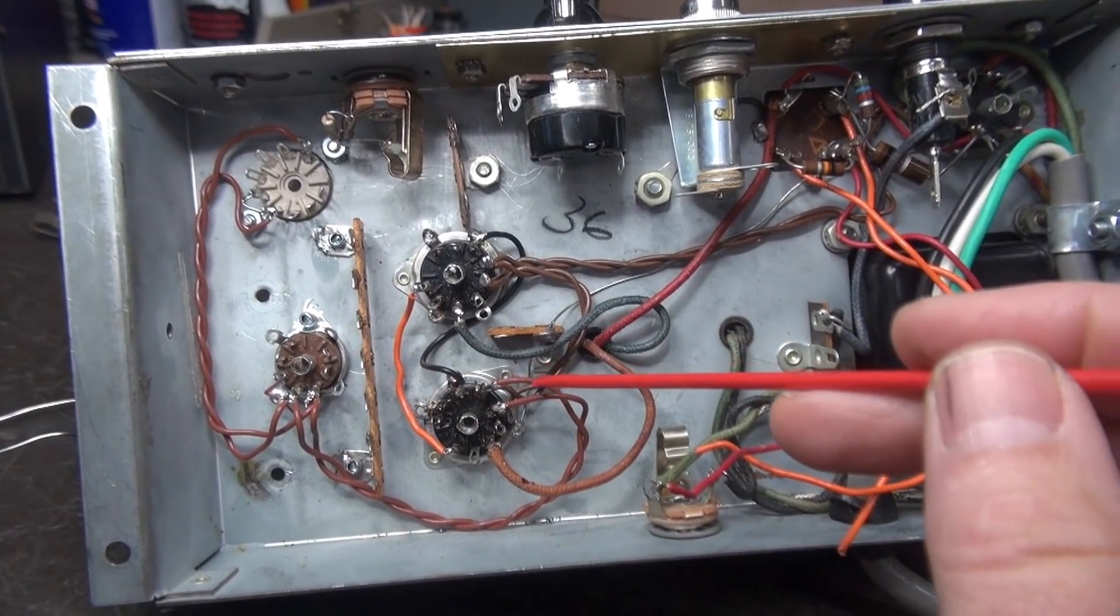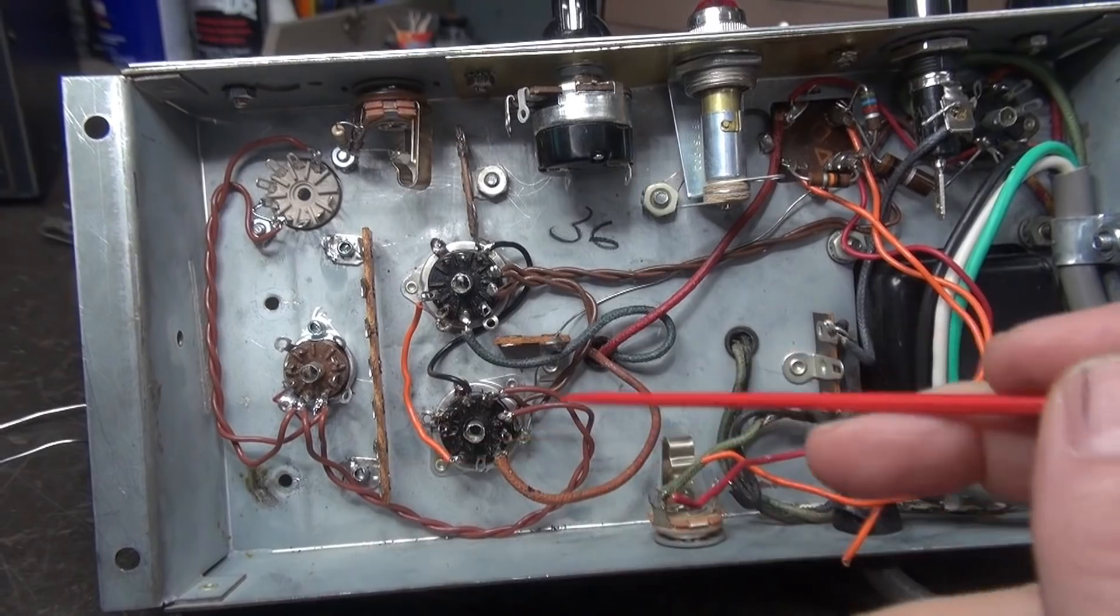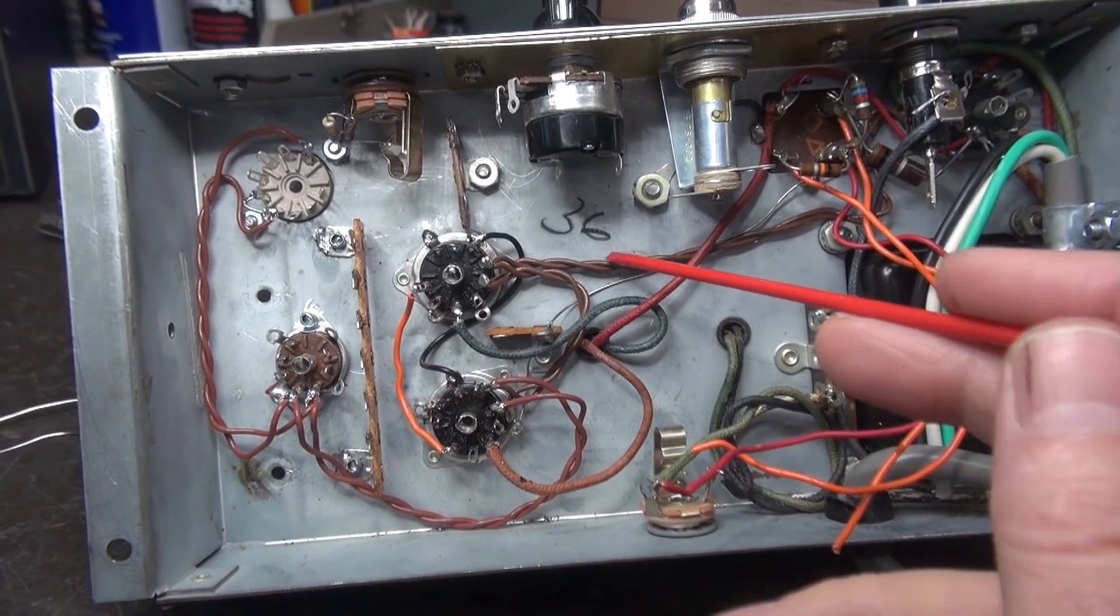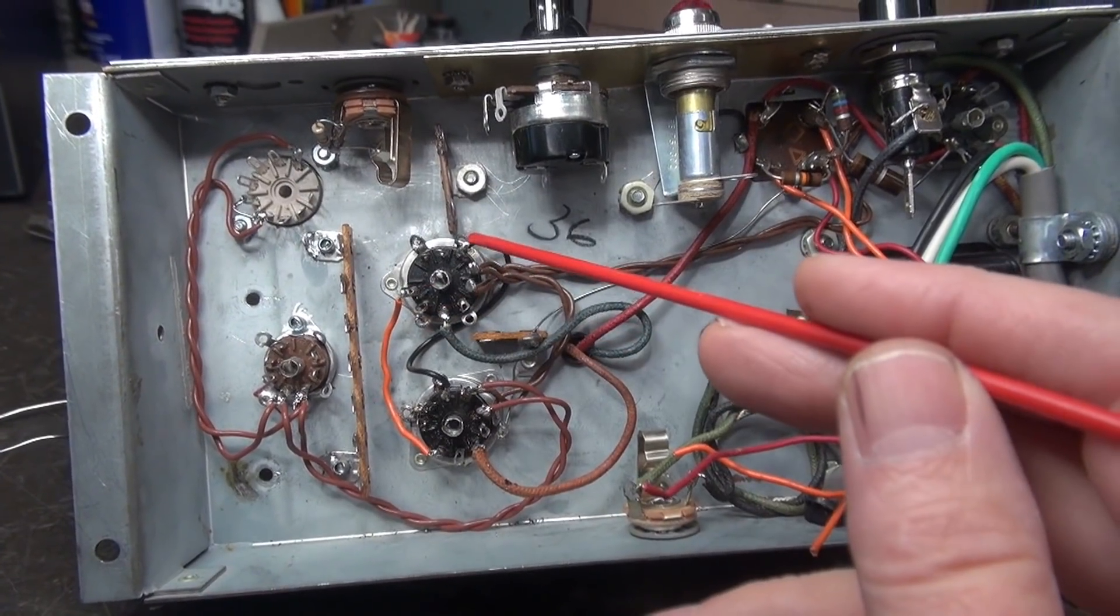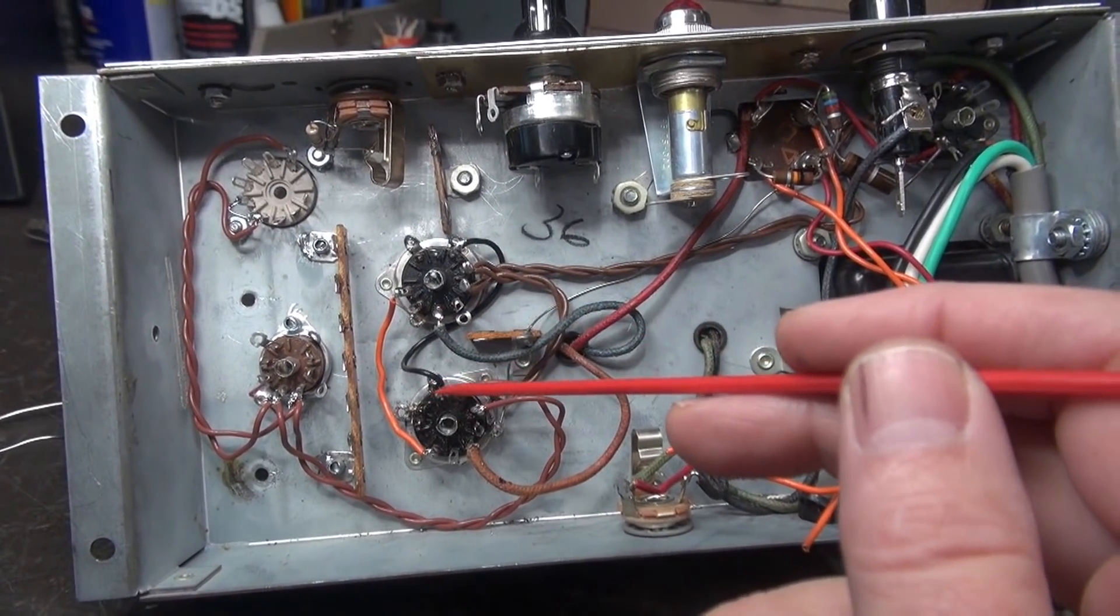She's coming along. I found some brown wire for the filaments to match the stock wiring. This little guy here is the screen circuits going to pin 9. And this black wire is the cathode going to pin 3.